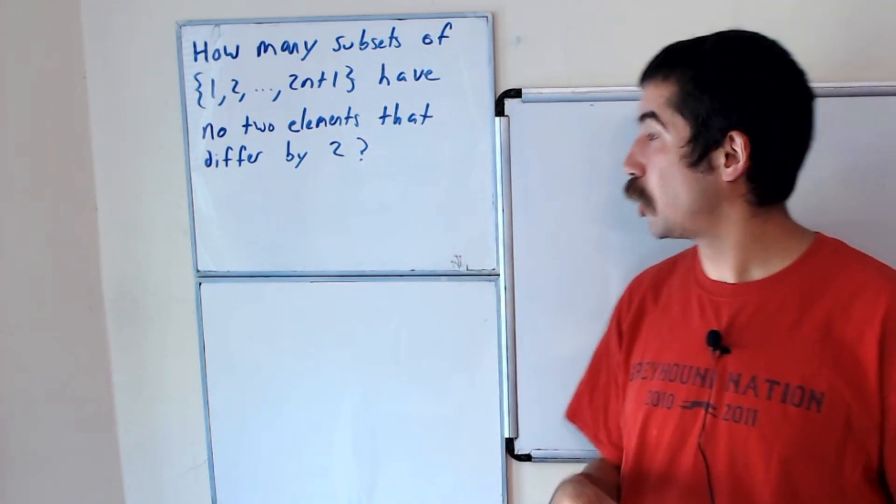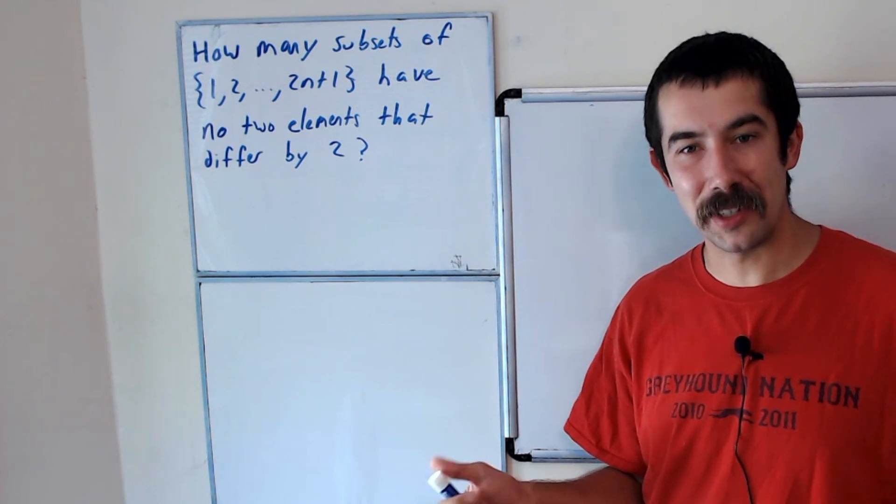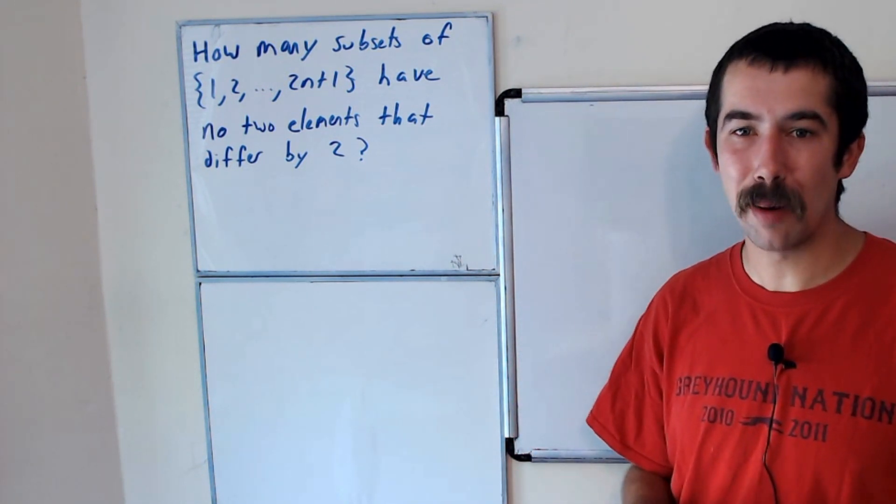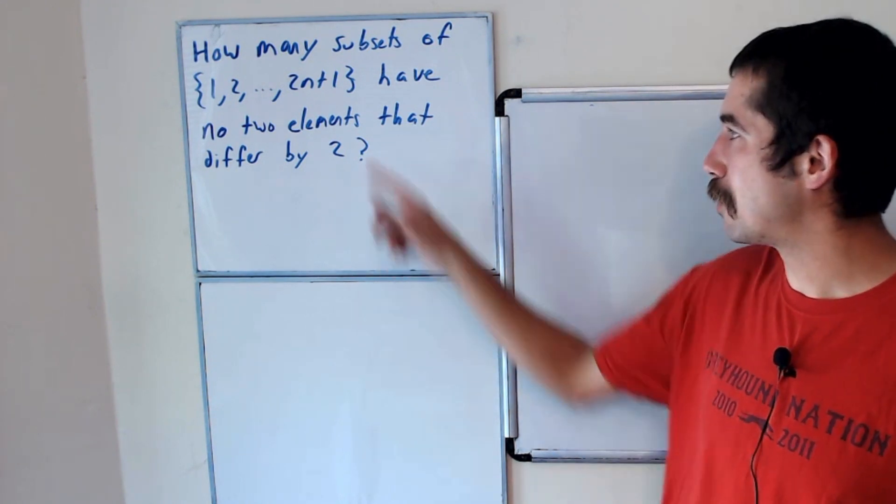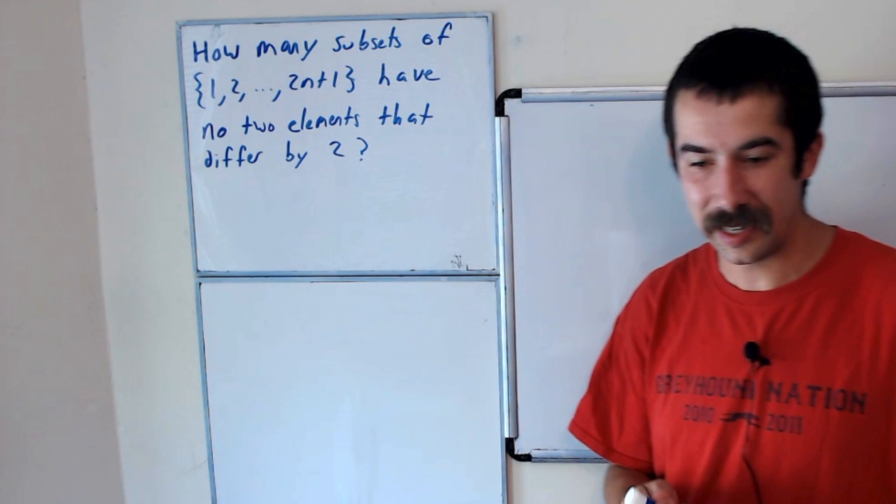How many subsets of the first 2n plus 1 natural numbers have no two elements that differ by 2? So try this on your own, and this is very similar to a problem I did in the past, except instead of 2n plus 1, we did 2n. So try using those techniques.